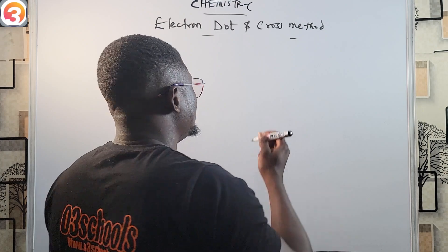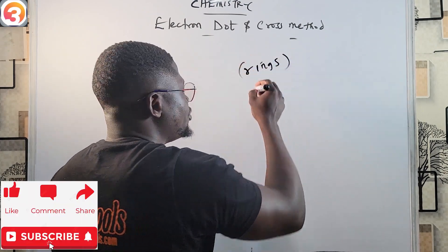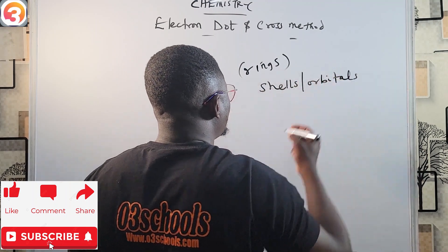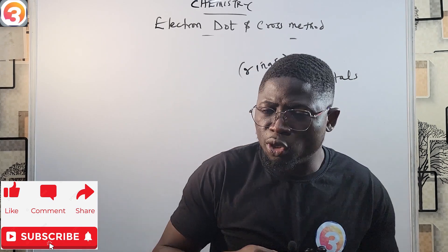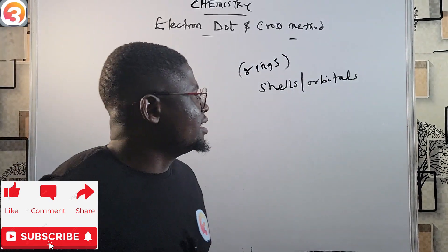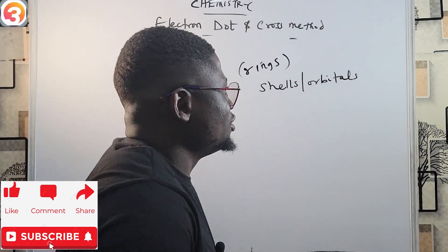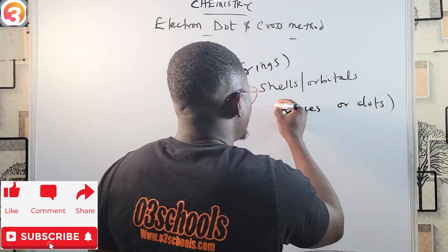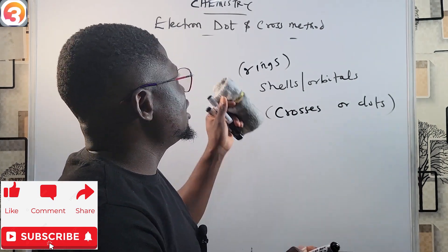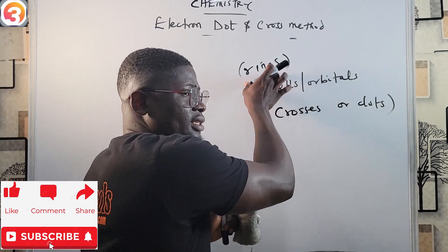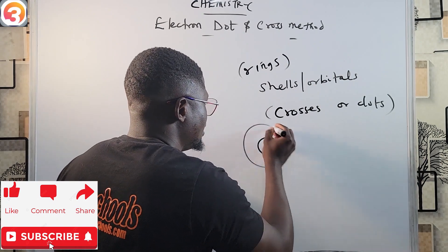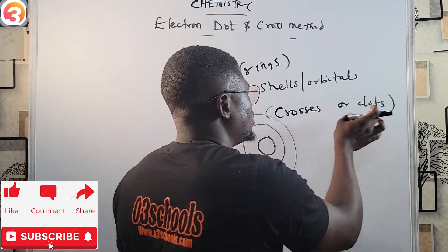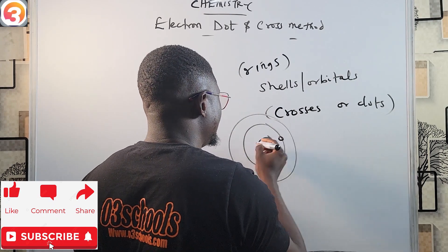In the electron dot and cross method, what we do is draw rings to represent shells or orbitals, and then we fill these shells with electrons represented as either crosses or dots. So we draw rings like this, and then we fill them with electrons drawn as crosses or dots.